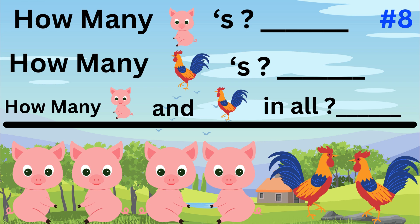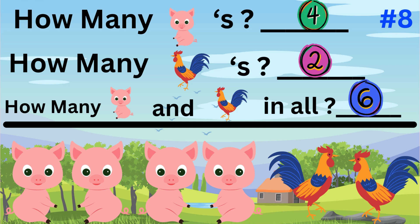Word problem number eight. The word problem asks how many pigs are there, how many roosters are there, then how many pigs and roosters in all? Work the problem and then we'll review together. The answer is four pigs plus two roosters equals six animals in all.